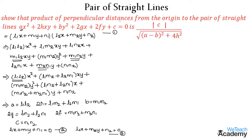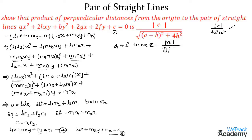We need to find the product of perpendicular distances from the origin. Let d₁ be the perpendicular distance from the origin to equation 2. The formula for perpendicular distance from the origin is |c|/√(a² + b²). Substituting, d₁ = |n₁|/√(l₁² + m₁²). Similarly, d₂ = |n₂|/√(l₂² + m₂²).